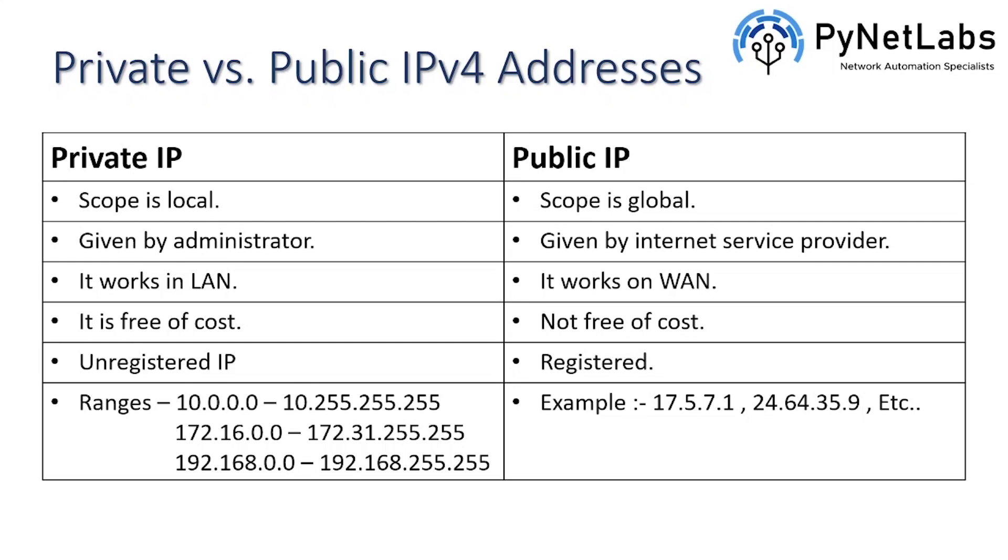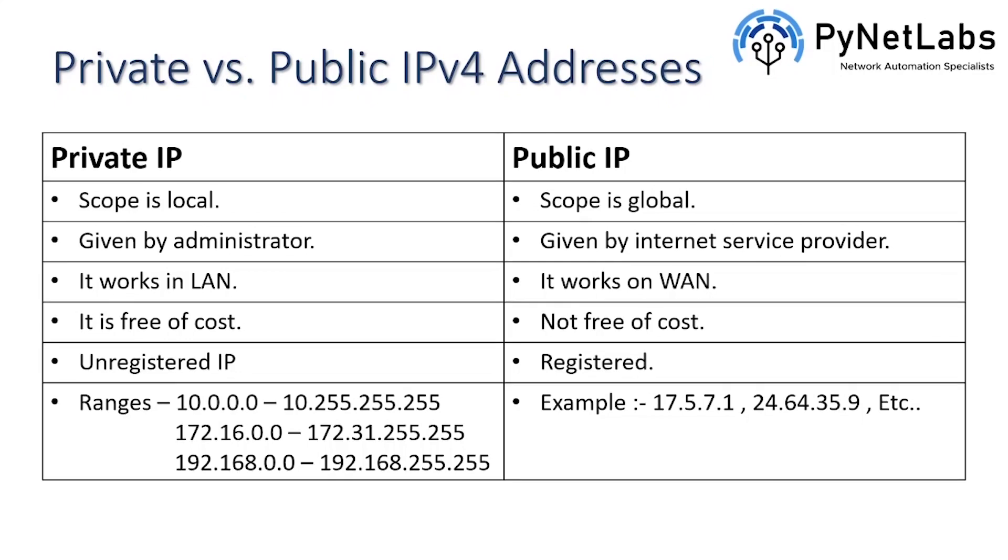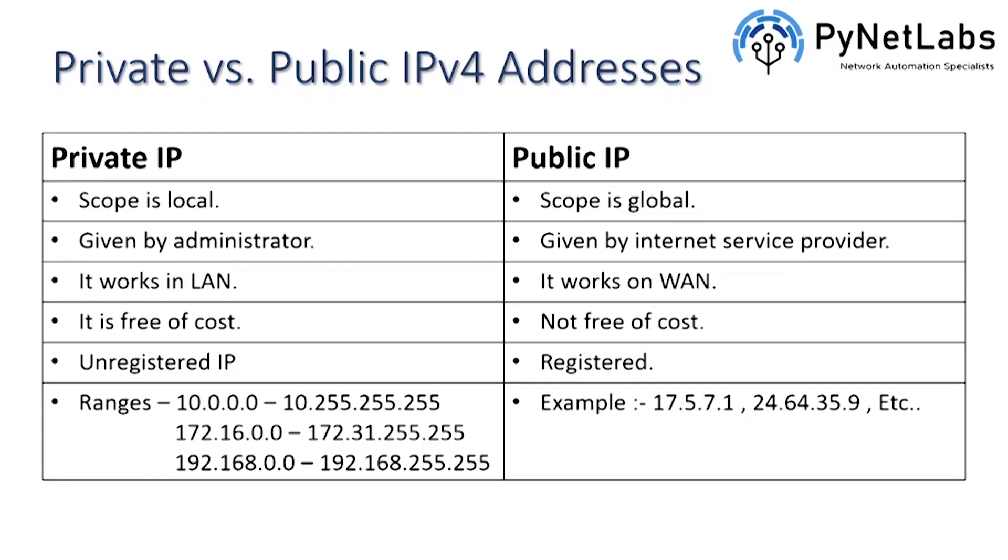The private IP's scope is local. That means it can be used for local communications. If I have five PCs with me and I want them to communicate with each other, I can simply put some private IP on each of them, keep them inside the same network and they'll be able to communicate. But let's say I want these five PCs to communicate with the internet. I want them to reach out to the internet, to communicate with another organization's devices which is in some other state. Then I would need a public IP address because the scope of public IP is global.